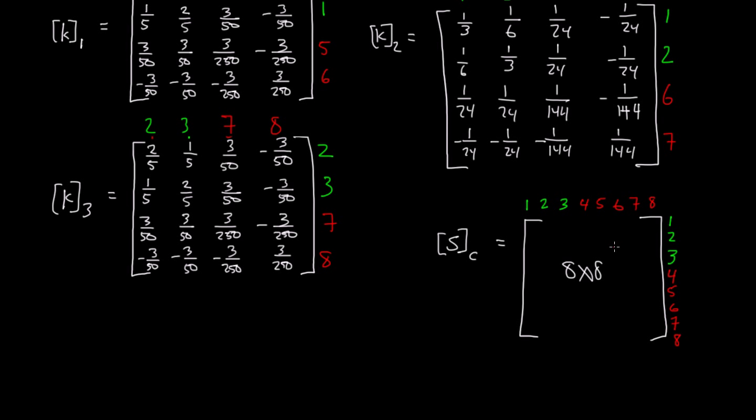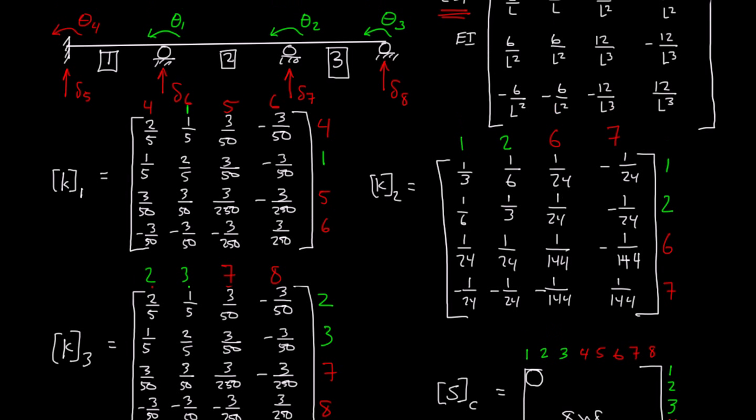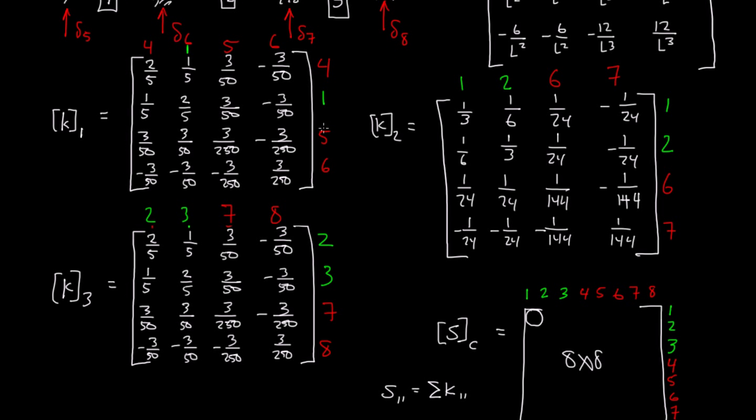Since this is an 8 by 8 matrix, we know that there are going to be 64 values we need to calculate. The way we calculate these 64 values is we look at one spot. So we come here to S sub 1,1 (row 1, column 1, which is this spot right here). S sub 1,1 is equal to the sum of all K sub 1,1. In other words, we look up here to our three stiffness matrices, and everywhere we see a 1,1, we take those values and add them together.